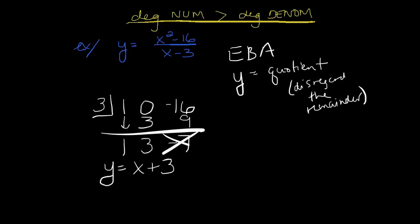That's where the EBA of this rational function will be. Now notice, that EBA is a slanted line. We also call that an oblique line, not a horizontal line. And that's okay. Sometimes we're going to get EBAs that are parabolas or even cubic functions. They can be crazy.